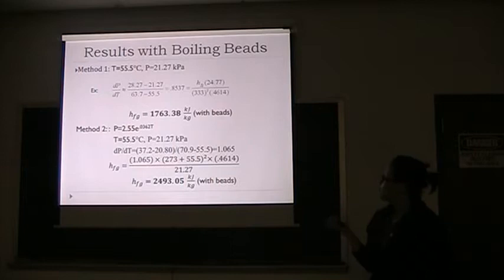The second method finds the equation of pressure in terms of temperature. Setting the same temperature as 55.5 and putting this temperature in the equation to get pressure and relative temperature, dP/dT is 1.065, giving a latent heat of 2493.05 kJ/kg.